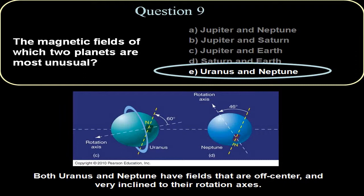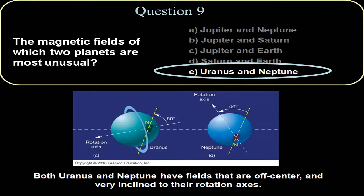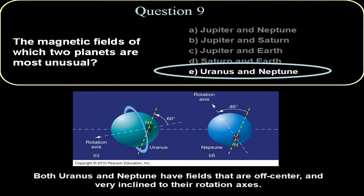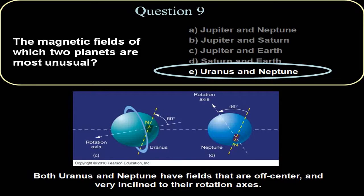I tell my class that I have my own theory, which is that by the time Voyager got to these planets, its measurement of the actual axis of the magnetic field was frozen and did not make good measurements on these two planets.